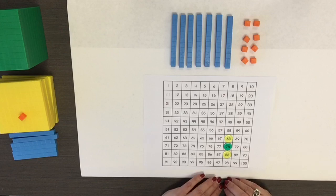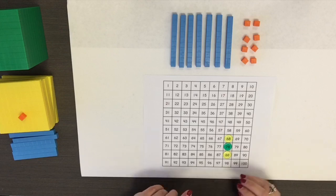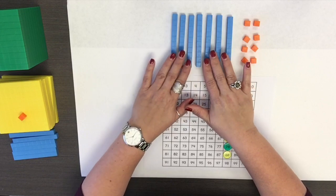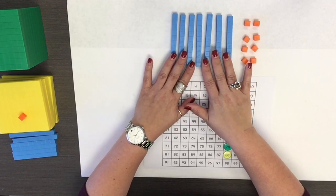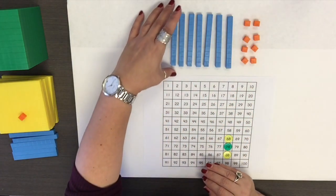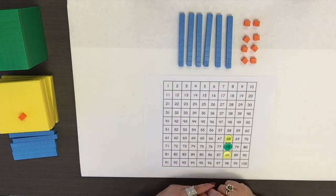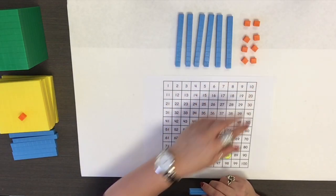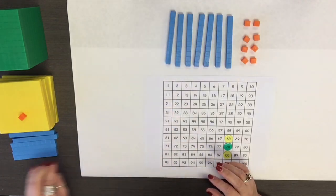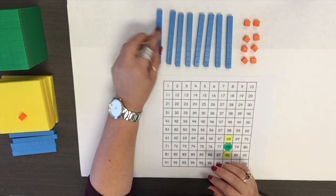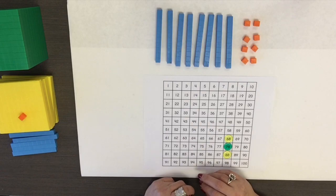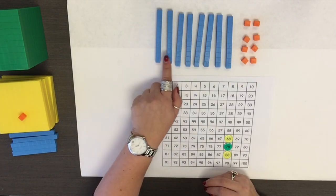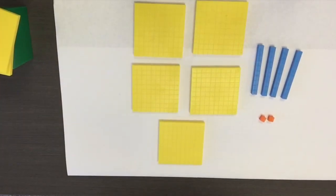I can also model this with place value blocks. I have 78 modeled here. If I remove one, my tens place has decreased by one, leaving me a model of 68. If I add a 10, my tens place has increased one, showing me a model of 88.